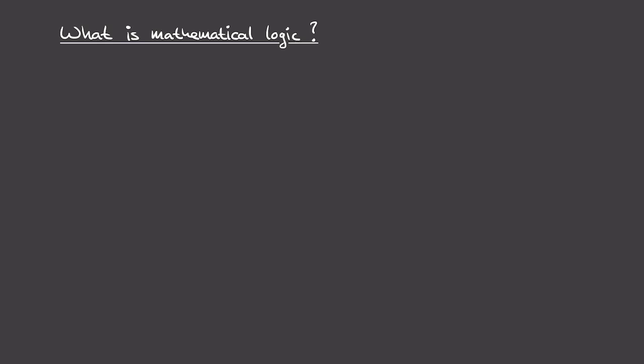To set the scene, suppose we're living in a world where people are super into numerology — the idea that numbers and their properties somehow have an immediate influence on things in the world. In this setting, we have some set of numbers. For simplicity, let's choose the natural numbers: 0, 1, 2, 3, 4, and so on.